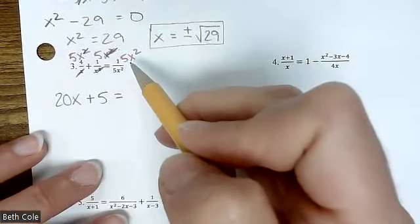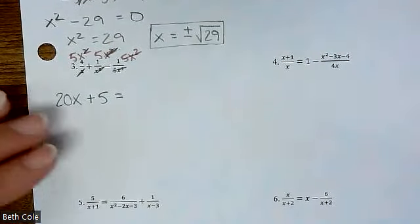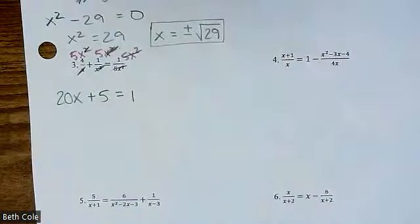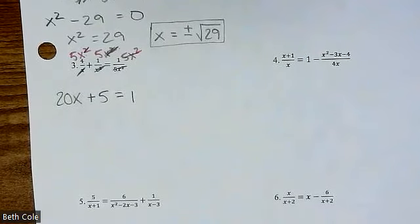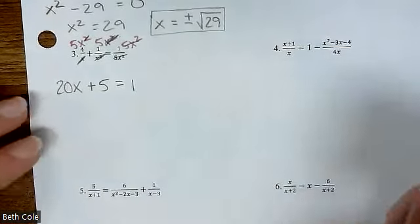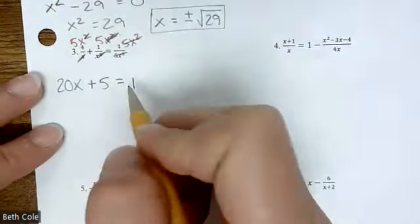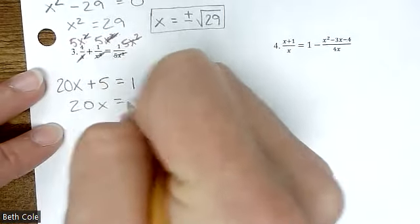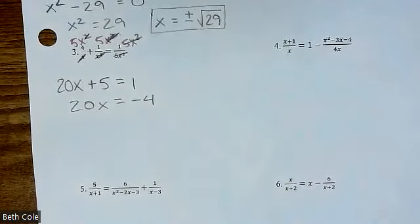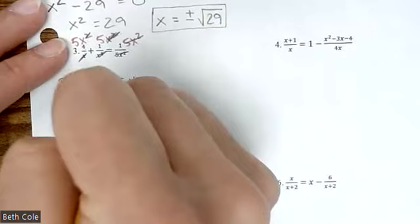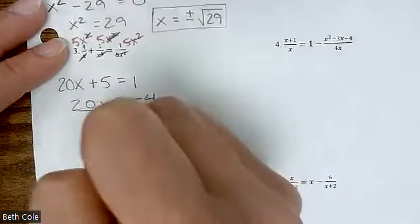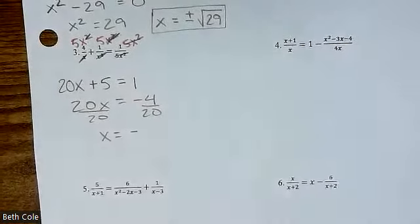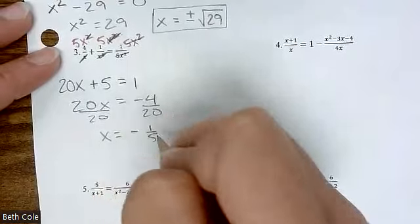And then what cancels for the last one? The whole everything — so you're just left with one. The problem sort of disintegrates, and now you're left with basically an algebra one style problem. What would you do to solve that? Minus the five, so that's one minus five, negative four. Divide by 20 — that'll reduce to negative one fifth.